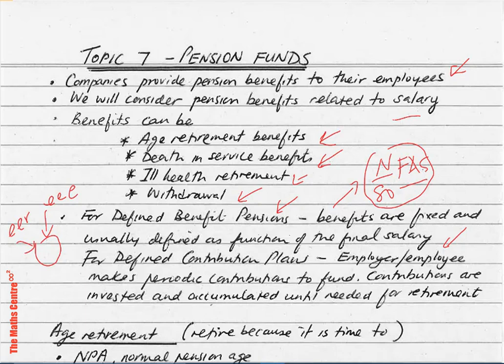To summarize, we'll be dealing with four kinds of benefits: age retirement benefits, death in service benefits, ill health retirement benefits, and withdrawal benefits. We'll spend quite a bit of time on defined benefit plans, and say a few words about defined contribution plans at the end of the section on pension funds.